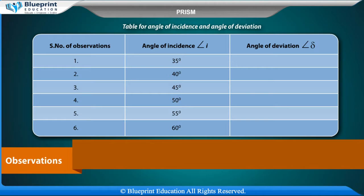Table for angle of incidence and angle of deviation: Serial number of observations, angle of incidence angle I, angle of deviation angle delta: 35 degree, 40 degree, 45 degree, 45 degree, 45 degree, 50 degree, 55 degree, 60 degree.